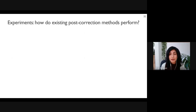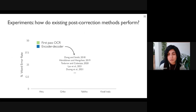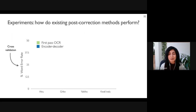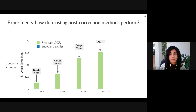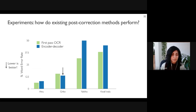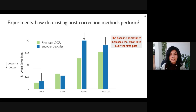We first look at how the baseline OCR post-correction system performs compared to the first-pass OCR. Due to the small dataset size, we report word error rate using ten-fold cross-validation averaged over five random seeds for each language, selecting the best performing first-pass OCR — Ocular for Kwakwala and Google Vision for the other three languages. The baseline character-level encoder-decoder model without our proposed adaptations actually improves word error rate a little for Greco but worsens performance for the other languages, indicating that the limited data is not enough for the model to learn a good distribution.